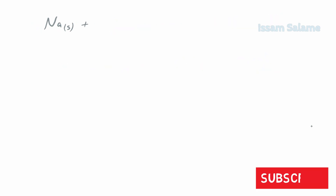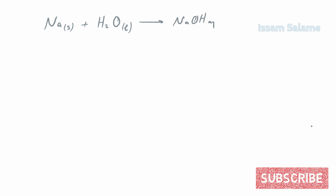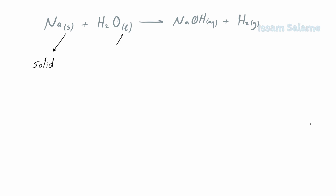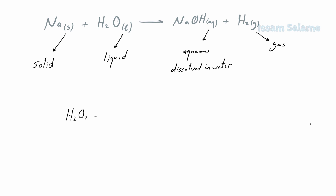Now let's describe some notations used in formula equations. In a chemical formula equation, (s) means solid, (l) means liquid, (aq) means aqueous, and (g) means gas. For example, sodium is in the solid state, water is in the liquid state, sodium hydroxide is aqueous meaning dissolved in water, and hydrogen is a gas.